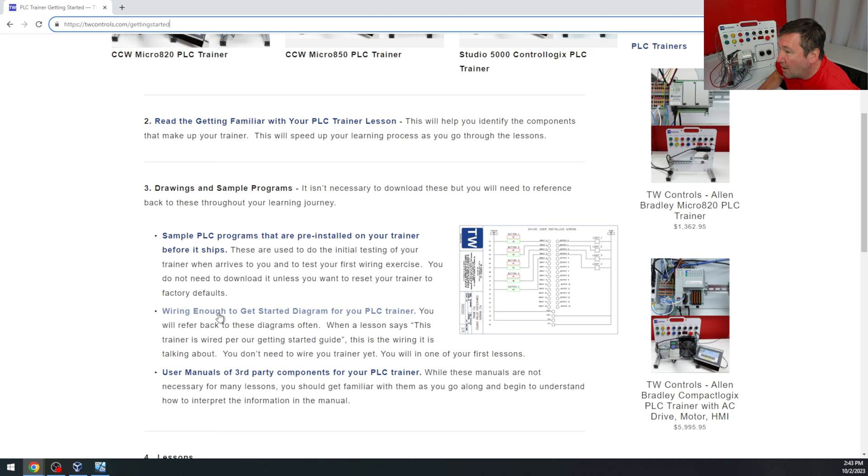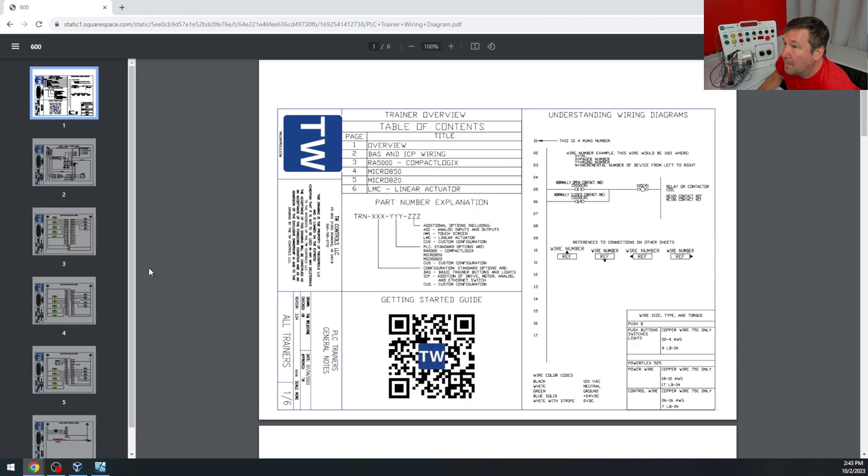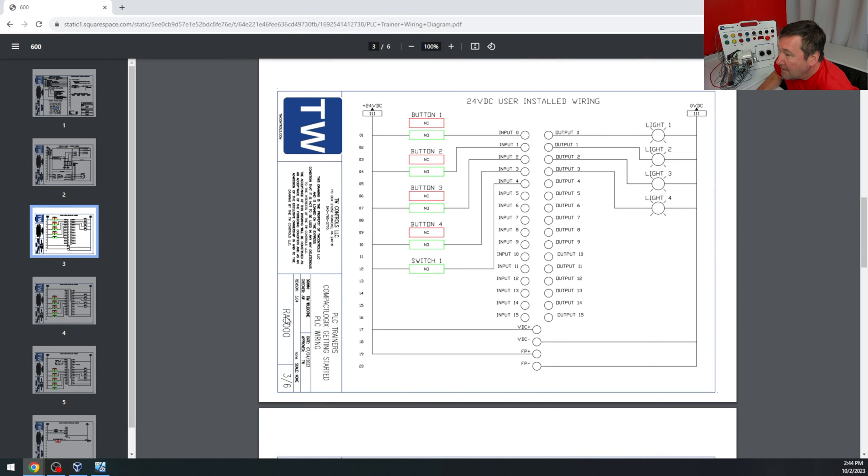In section three, we have our wiring enough to get started diagram. We're going to be following the RE5000 wiring diagram for the Compact Logix PLC with a few additions.